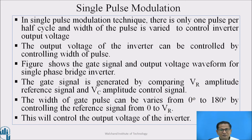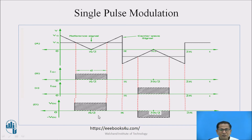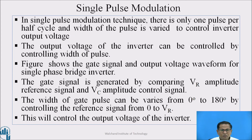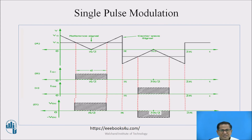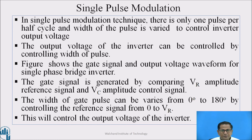The output voltage of the inverter can be controlled by controlling the width of the pulse. This figure shows the gate signal and the output voltage waveform for the single phase bridge inverter. These two are the gate pulses and this is the output of the single phase bridge inverter. In this methodology, the gate signal is generated by comparing the reference signal with a triangular carrier signal; at the intersection point the pulse is produced. The width of the gate pulse can be varied from 0 to 180 degrees by controlling the reference signal from 0 to VR, which controls the output voltage of the inverter.